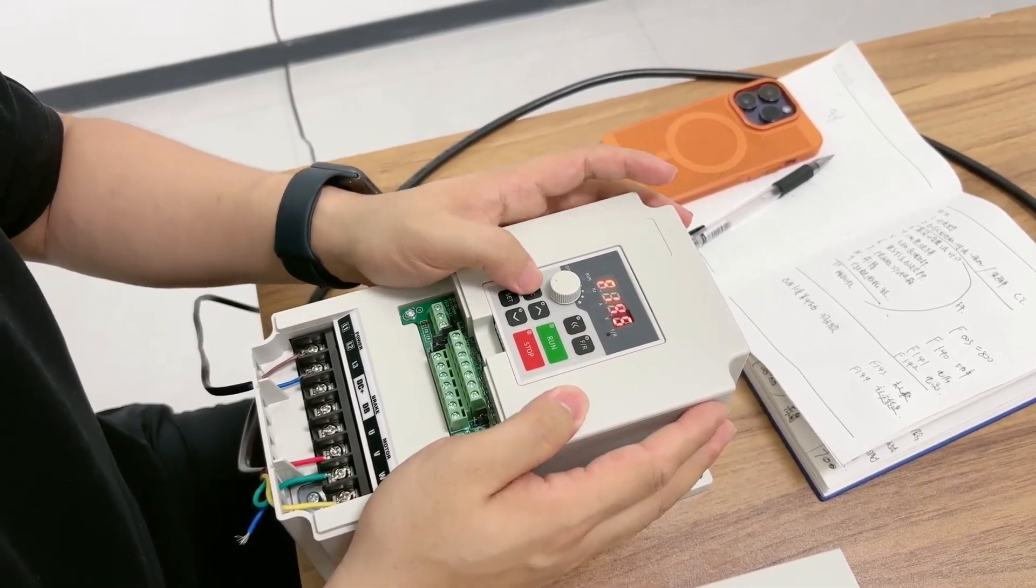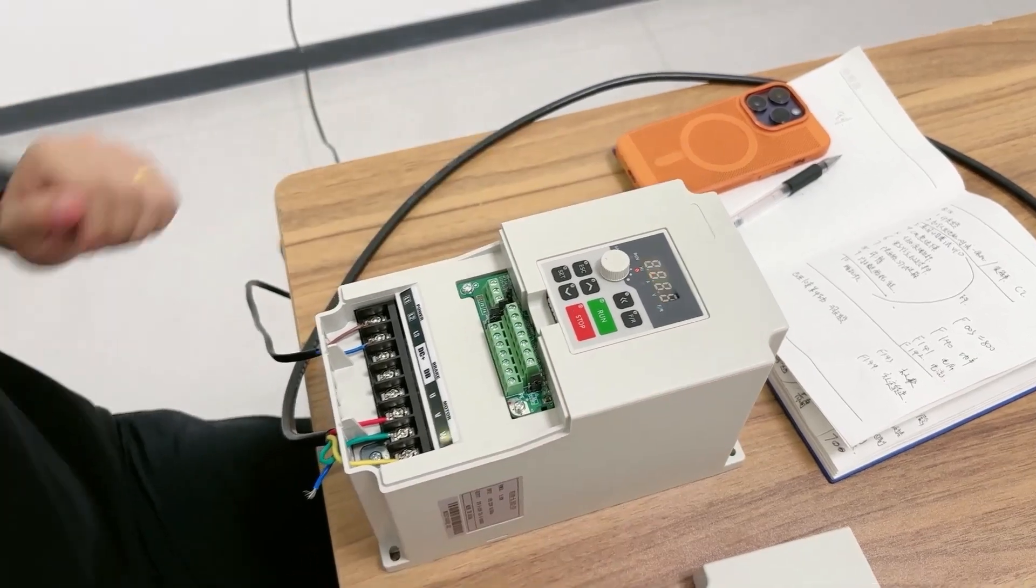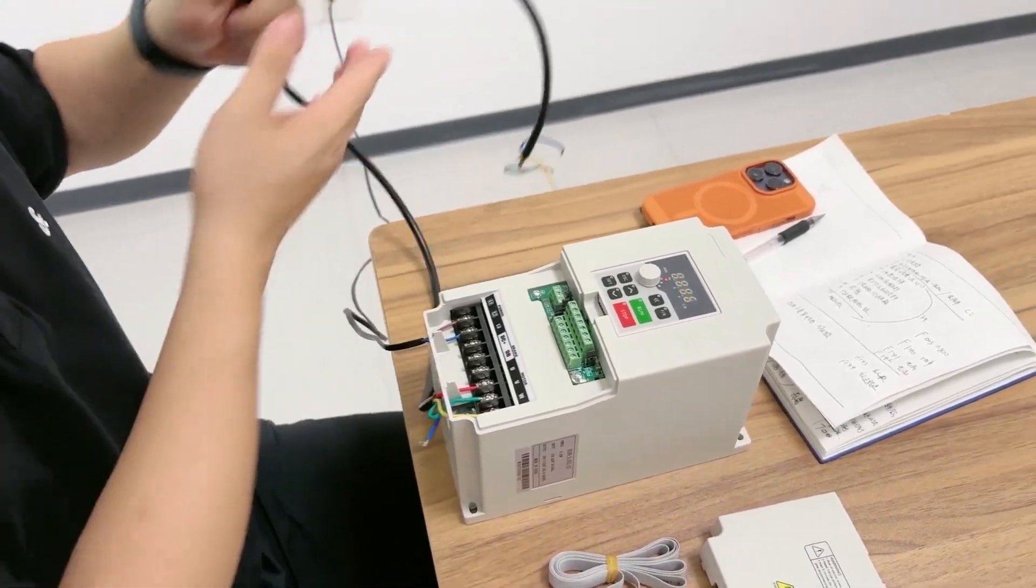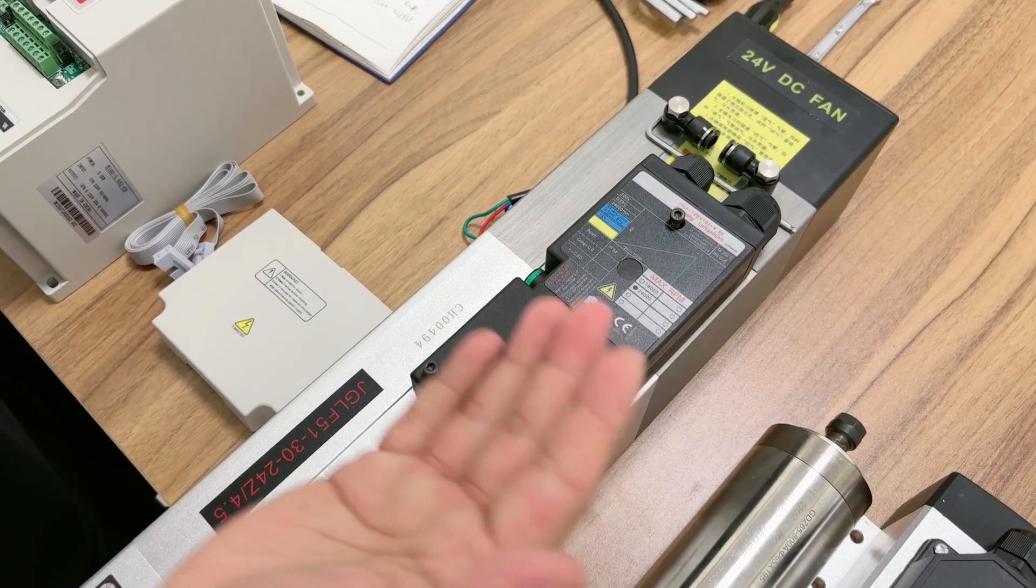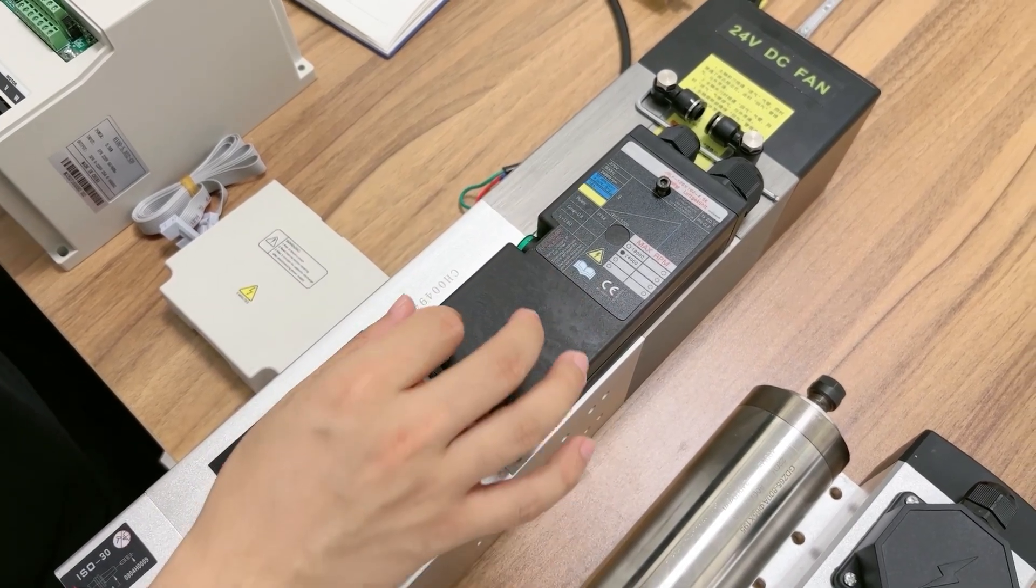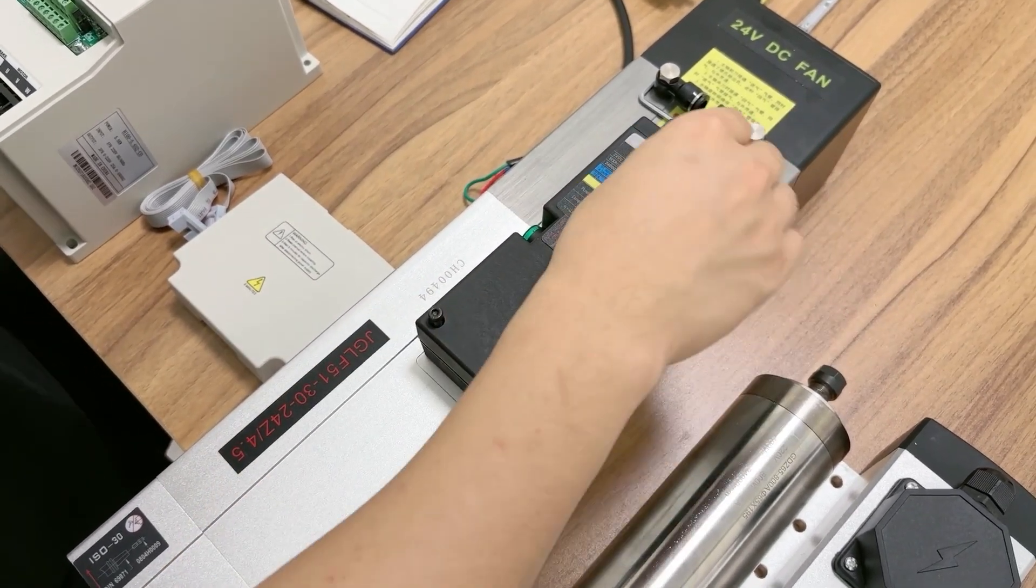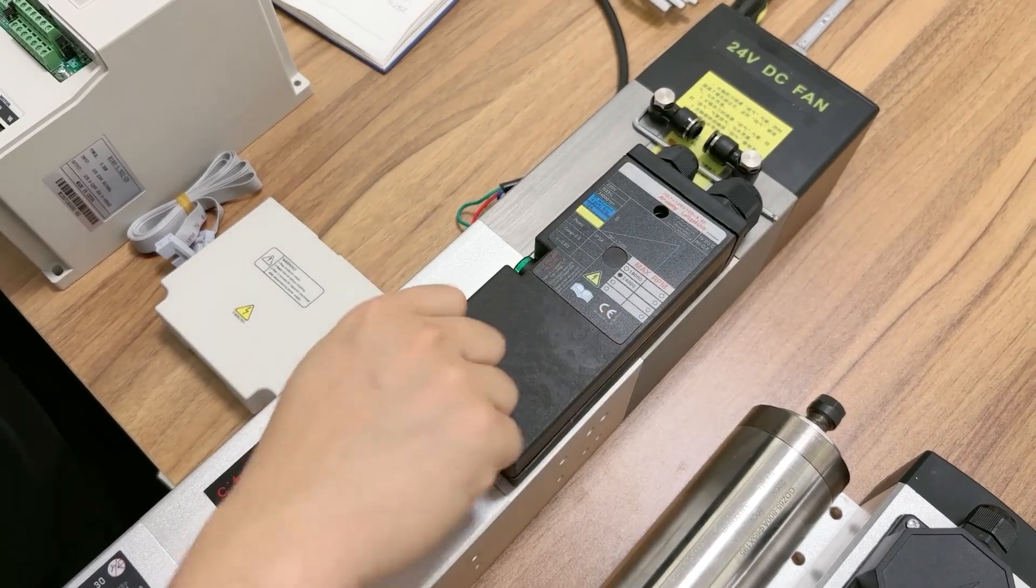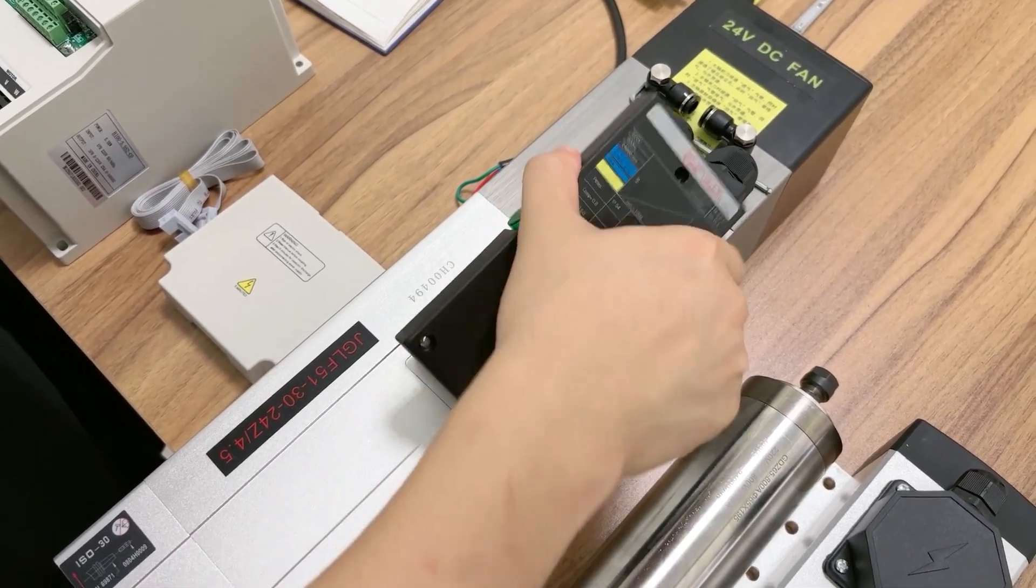This part is already done. Then I need to connect the UVW for the ATC spindle. All the connector parts are inside this box, so I need to assemble the screw and open this box.